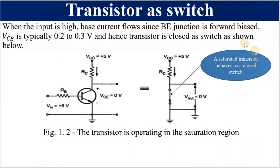The transistor is operating in the saturation region when the input is high — it has been turned hard on — meaning the collector-to-emitter voltage, which is the output voltage, is equal to zero.